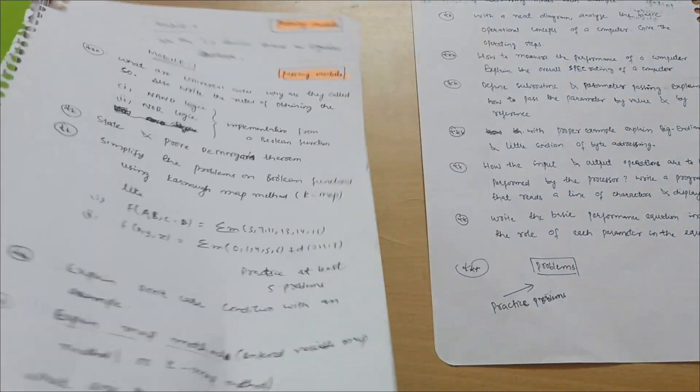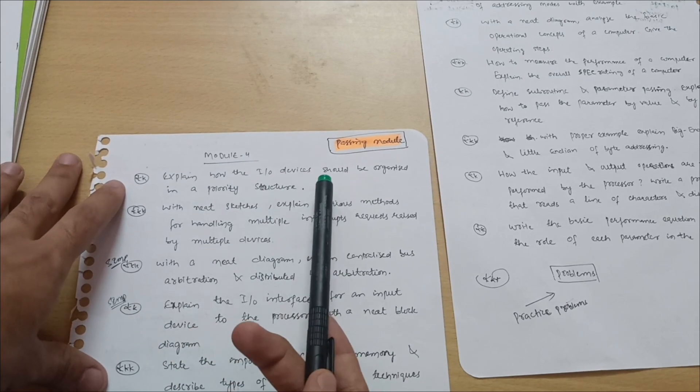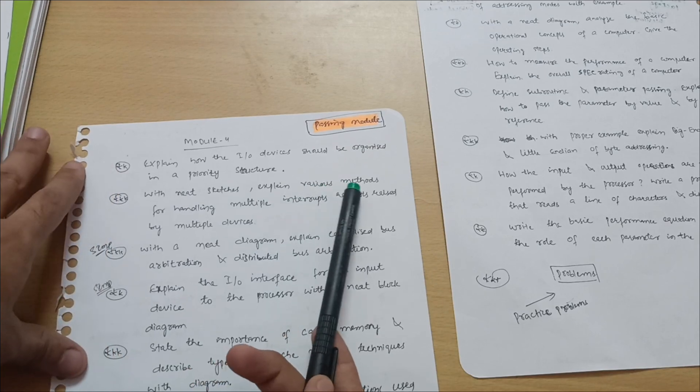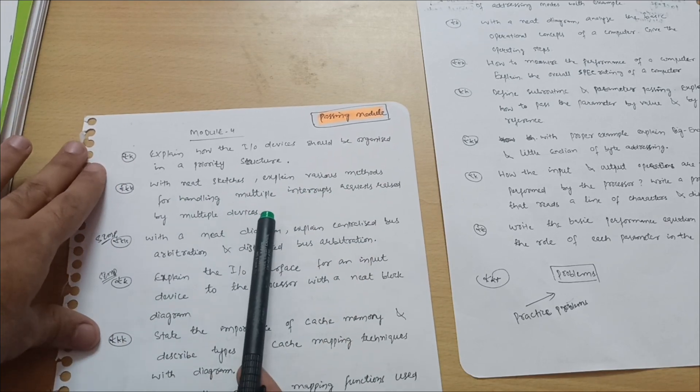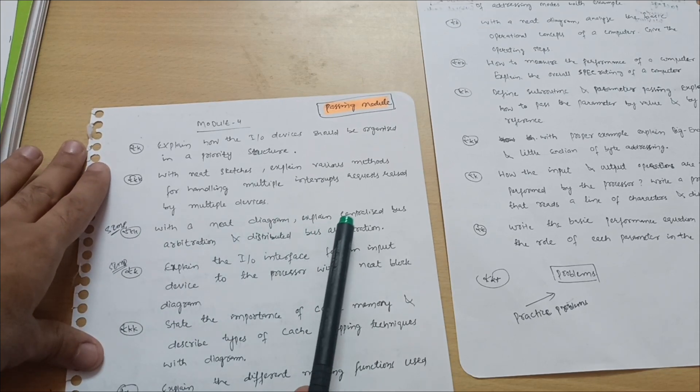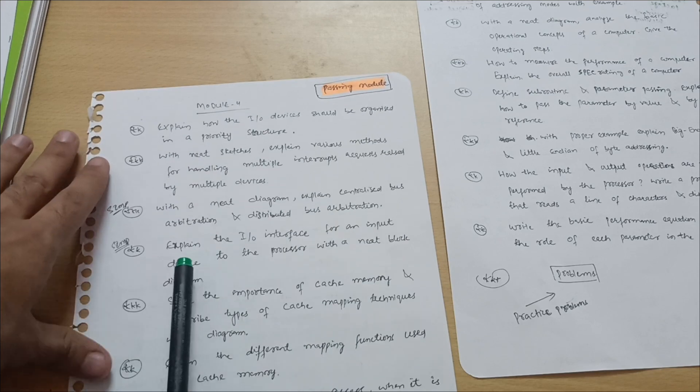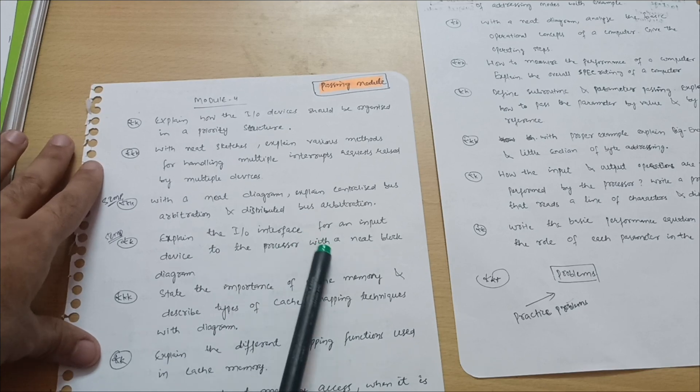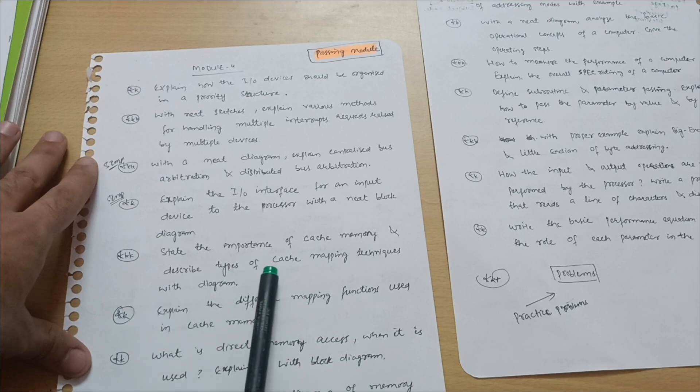This is your module first. Now let us discuss another passing module that is module 4: Explain how the input output devices should be organized in a priority structure. With the neat sketches explain various methods for handling multiple interrupt requests raised by the multiple devices. Next one is important one: With the neat diagram explain centralized bus arbitration and distributed bus arbitration. Explain the input output interface for an input device to the processor with a neat block diagram.